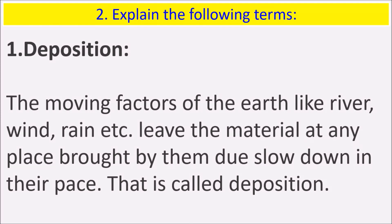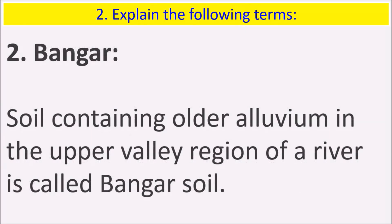The first term is deposition. The moving factors of the earth, like river, wind, air, rain, etc., leave the material at any place brought by them when they slow down in their pace. This is called deposition. Second is bangar soil — soil containing older alluvium in the upper valley region of a river is called bangar soil.